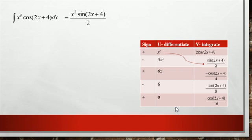The next term is multiply the minus with 3x square with the next row minus cos 2x plus 4 divide 4. So that is these three terms. We are getting minus into minus is plus 3x square cos 2x plus 4 by 4. That we can add it.